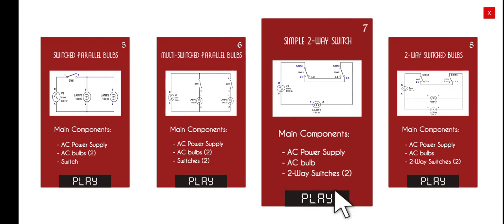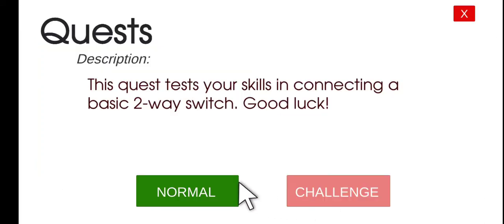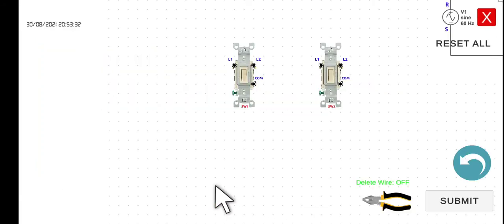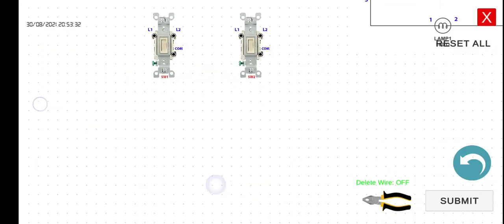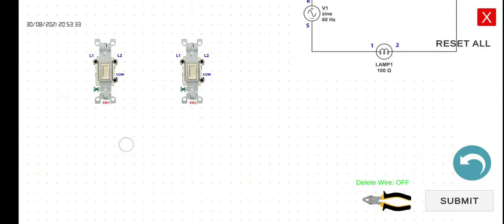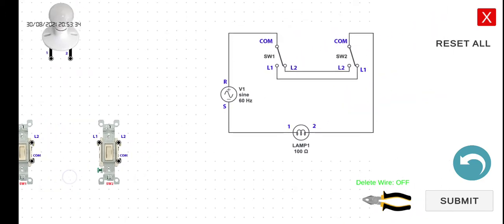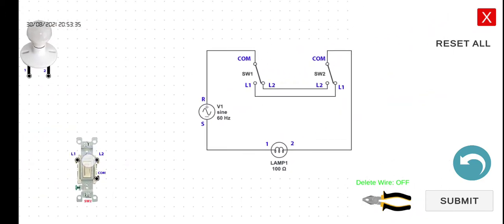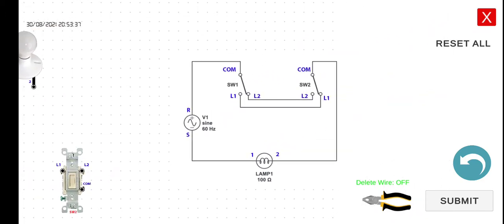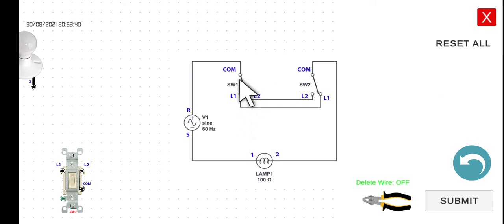Let's click play and then normal mode. Normally the application of this type of circuit is, for example, if you click this switch button on, this lamp one will turn on.